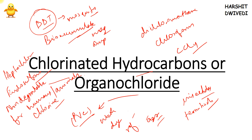In bird species, we sometimes see a problem where the eggshells are very thin. The reason for this thinness is persistent organic pollutants, which are present in the birds' food chain. A big problem with these pollutants is that they are not soluble in water but are soluble in fat. Water would normally flush these chemicals out of the body, but that does not happen because they are fat-soluble — lipid-soluble — not water-soluble.